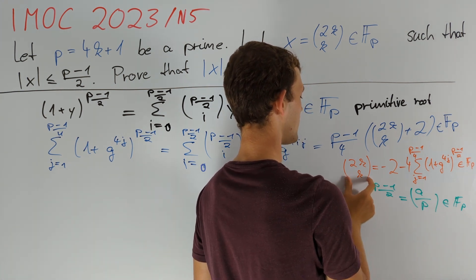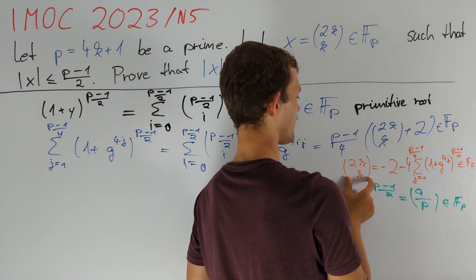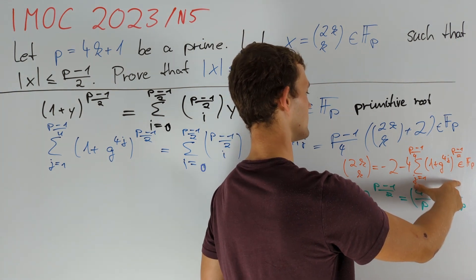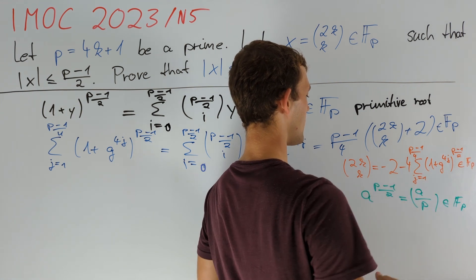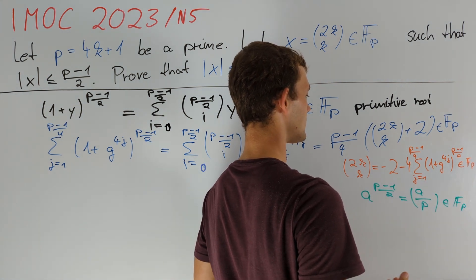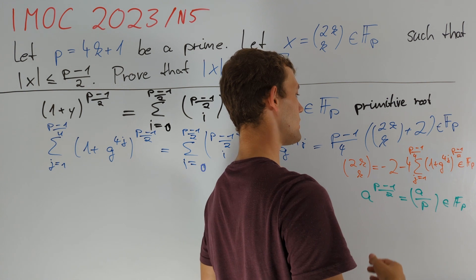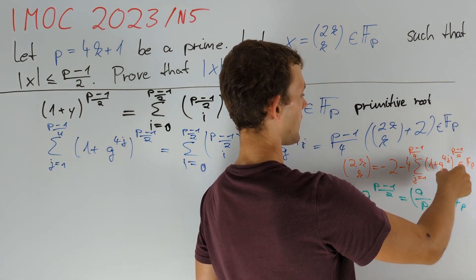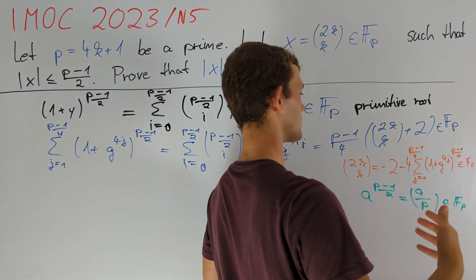We would like to prove that 2k choose k is close to 0 modulo p. In other words we would like to prove that this sum is also close to 0 modulo p. Now that we have our interpretations this tells us that we want to show that almost half of quartic residues plus 1 are quadratic residues modulo p.